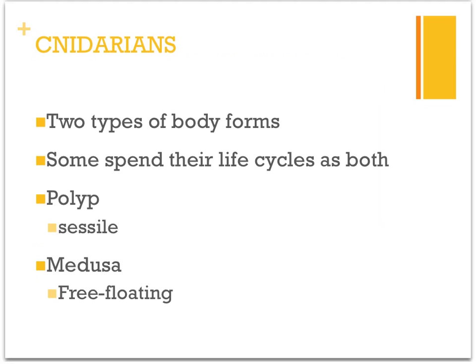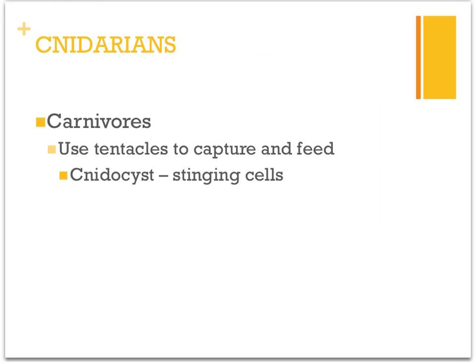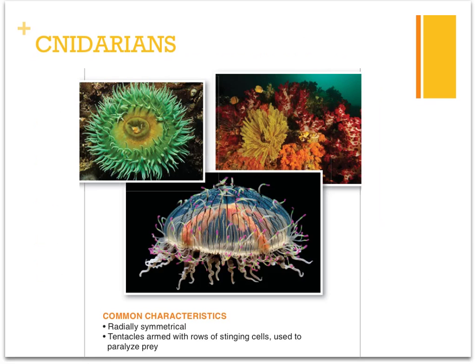Corals are cnidarians and are sessile. Jellyfish are the free-floating, moving medusas. Cnidarians are carnivores that use their tentacles to capture and feed. They have specialized cells called cnidocytes, which are stinging cells that paralyze their prey, allowing the cnidarian to capture and feed. They are radially symmetrical, meaning they can be divided from any point, and their tentacles are armed with cnidocysts.